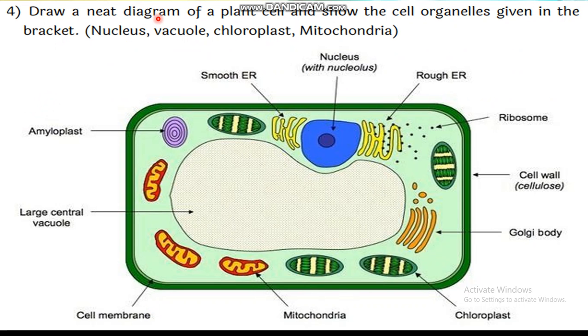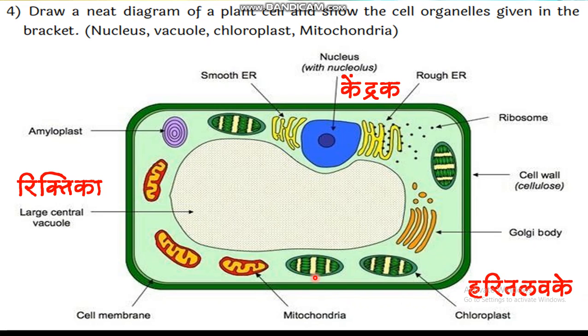Question Number 4: Draw a neat diagram of a plant cell and show the cell organelles given in the bracket. This is the figure of a plant cell. Here you can see many organelles, but we have to show only 4: 1, 2, 3, and 4. Where is the nucleus? This is the nucleus, called Kendrick in Marathi. It is a vacuole - a blank space, it is whole, vacuum-like. It is called large central vacuole. The green part you can see here, this is the chloroplast, Harit love ke in Marathi. And this part is known as mitochondria, energy cells. This is the image diagram of a plant cell.